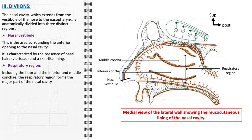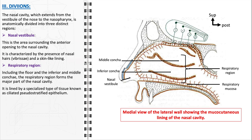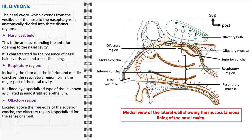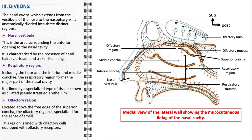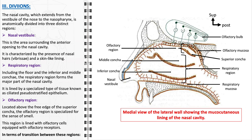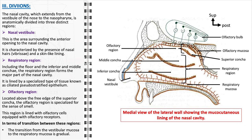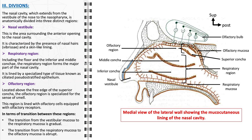The respiratory region, including the floor and the inferior and middle conchi, forms the major part of the nasal cavity. It is lined by ciliated pseudostratified epithelium, commonly referred to as respiratory epithelium, which plays a key role in filtering, humidifying, and warming the inhaled air, thanks to its cilia and mucous-secreting goblet cells. The olfactory region, located above the free edge of the superior turbinate, is specialized for the sense of smell, lined with olfactory cells equipped with olfactory receptors sensitive to odor molecules. The transition from vestibular to respiratory mucosa is gradual, while the transition from respiratory to olfactory mucosa is abrupt, signifying a distinct change in function from air conditioning and filtration to olfaction.